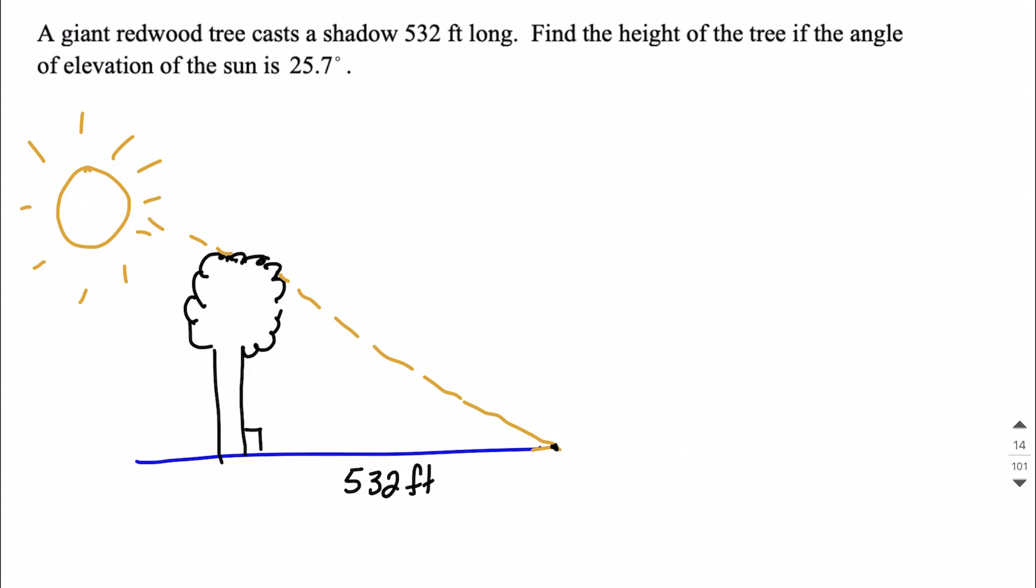I'm also going to go ahead and assume that this tree is growing straight up and down. So we get this nice right angle for our triangle to go along flush with the ground there.